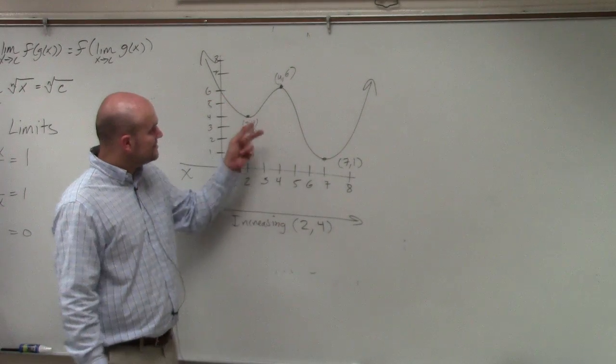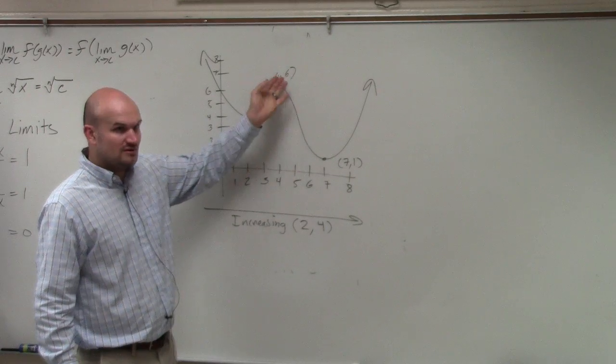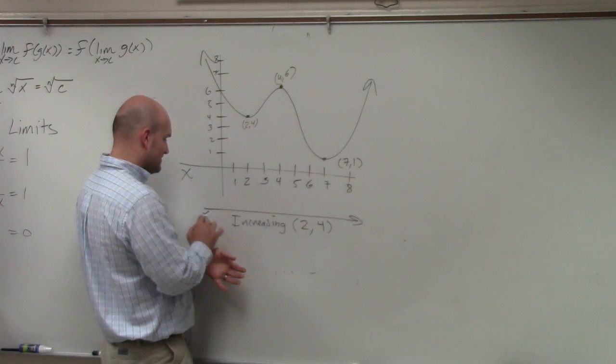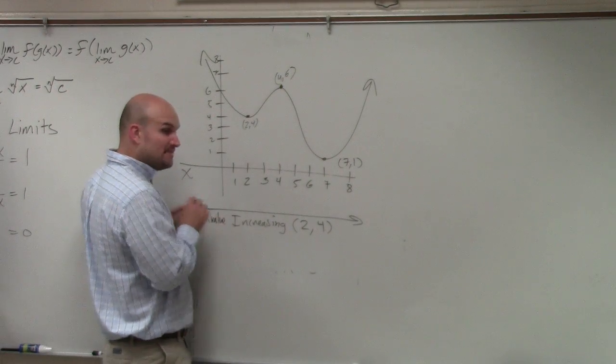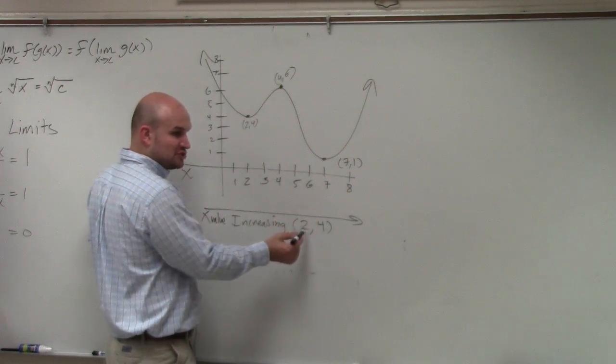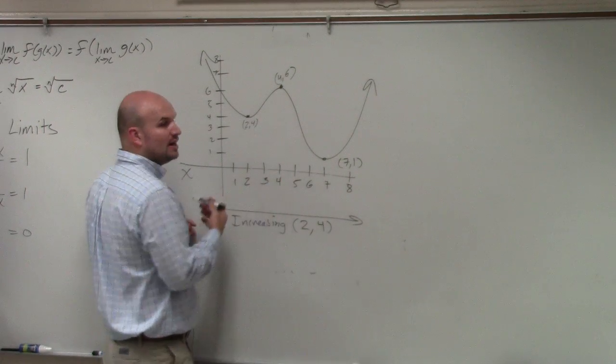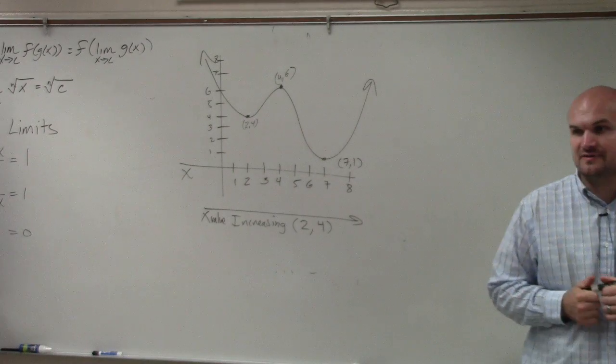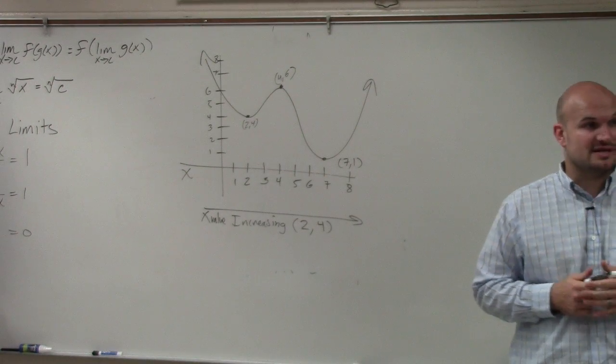We don't write the 6 for what the y value is. We're just saying the x value. The x value increases from 2 to 4. Where else is it increasing? Anybody else want to try? Where else is the graph increasing, from what x value to what x value?